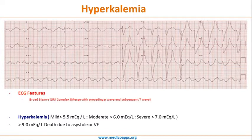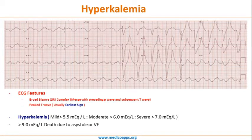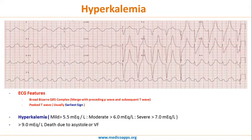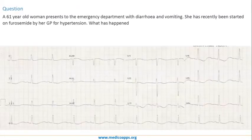The characteristic ECG changes in hyperkalemia include broad bizarre QRS complexes where the P wave and T wave appear to merge with the QRS complex. The second characteristic change is peaked T wave, which is usually the earliest sign in hyperkalemia. Additionally, in certain early cases, you can see a prolongation of the PR interval.